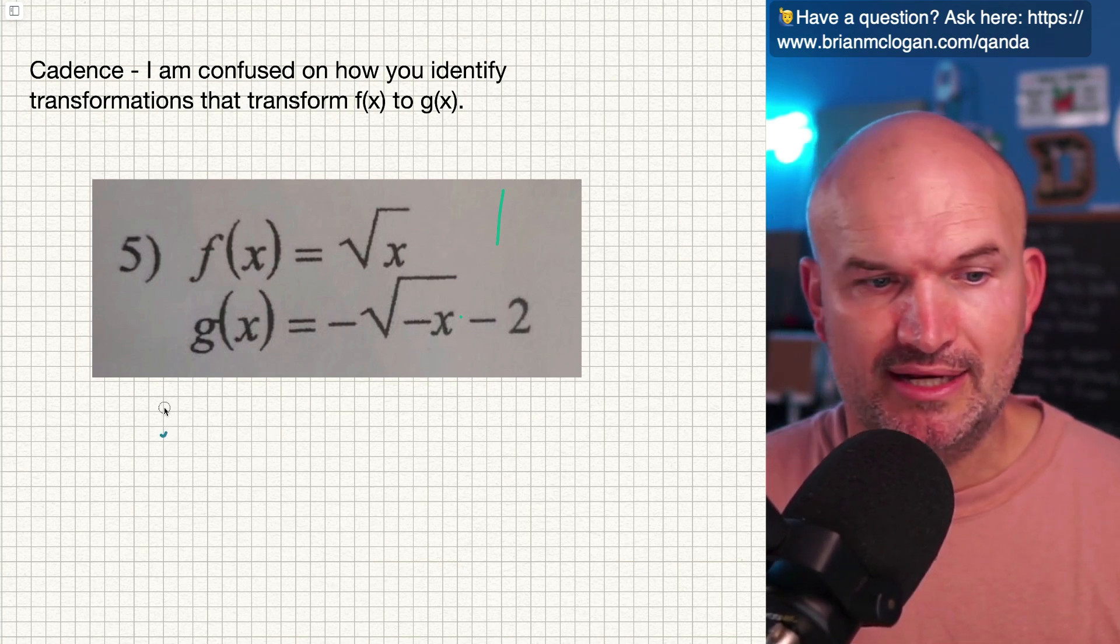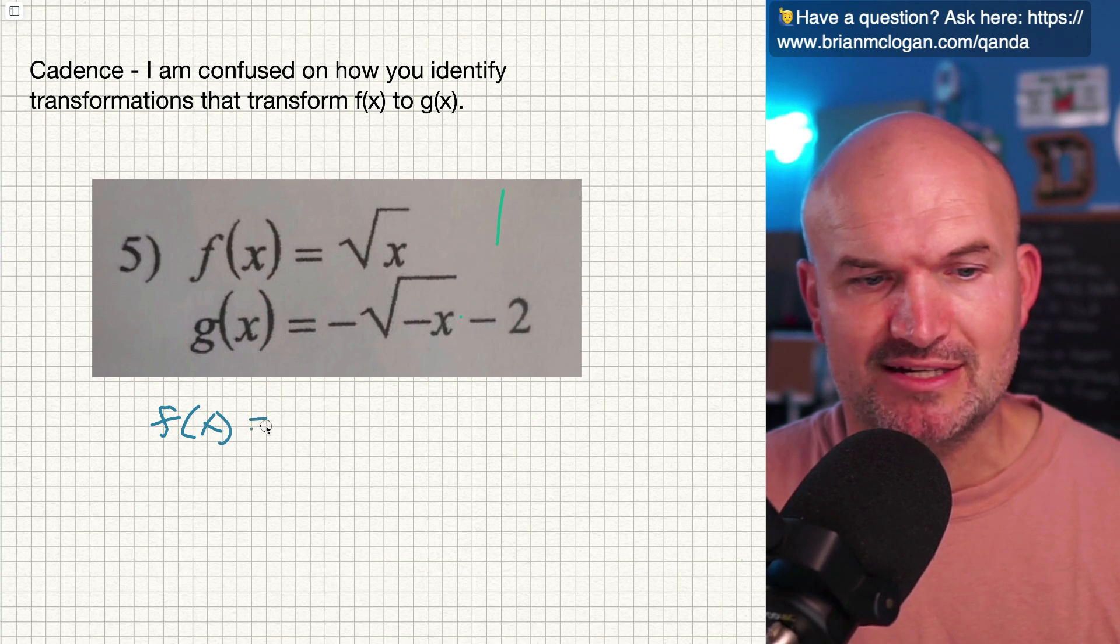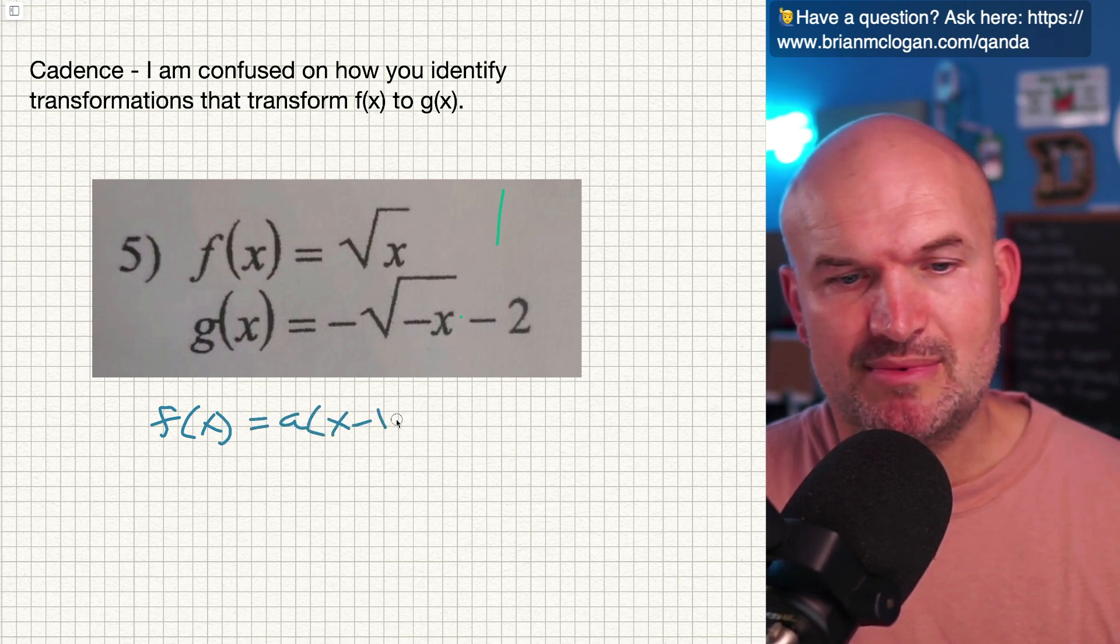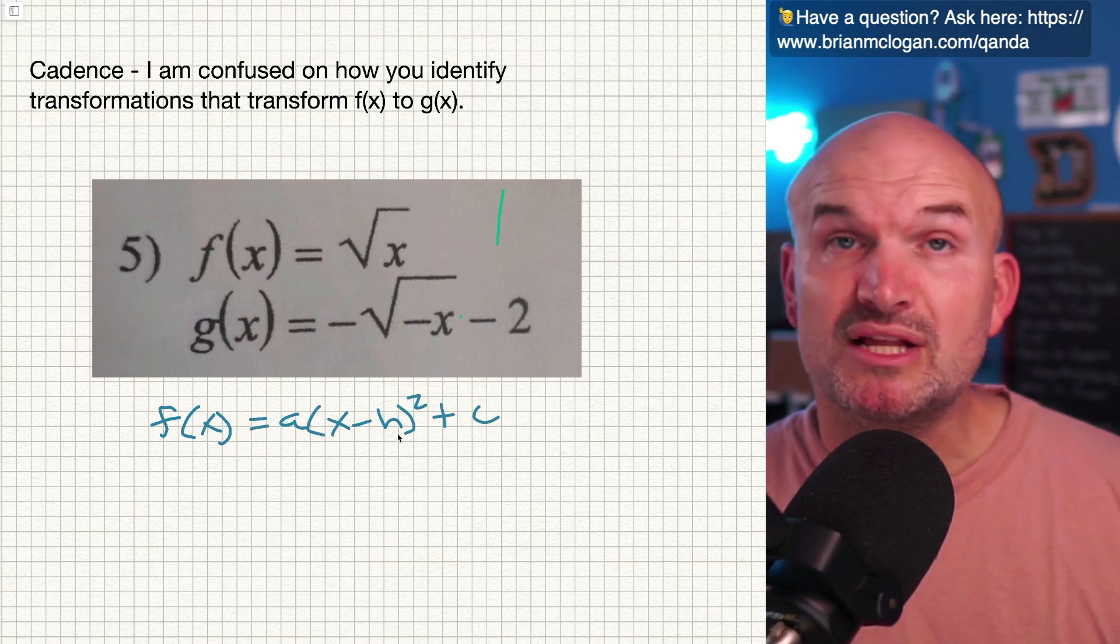So let's go down memory lane of quadratics. So if I have f of x, we have a times x minus h quantity squared plus c.